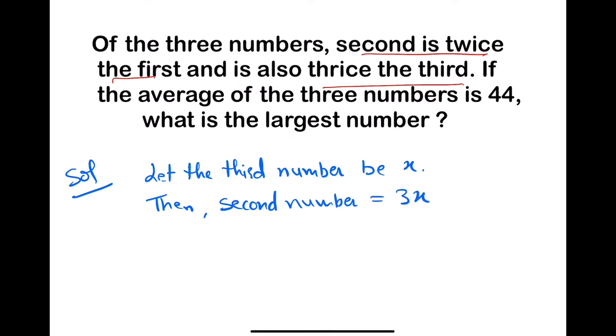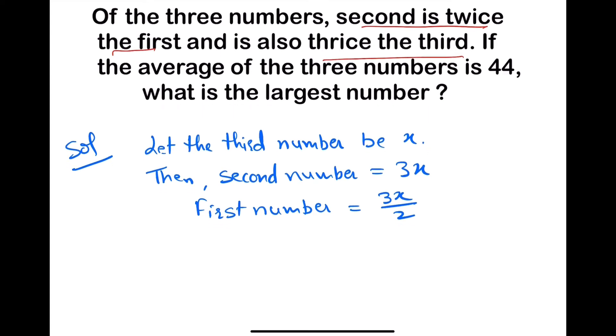And first number, second is twice of first number. It means first number is 3x upon 2, half of the second number. Now we have given that the average of all three numbers is 44.